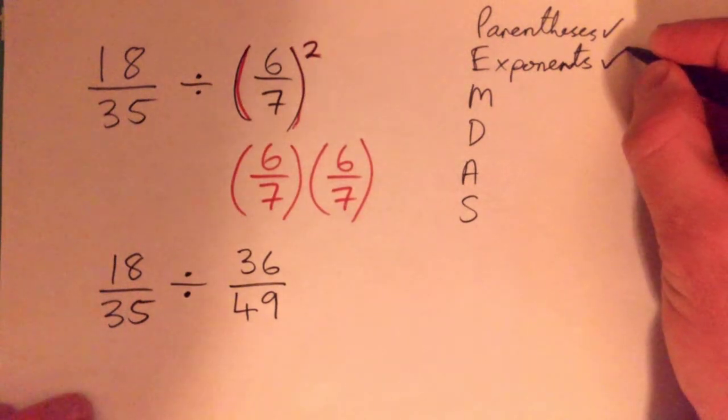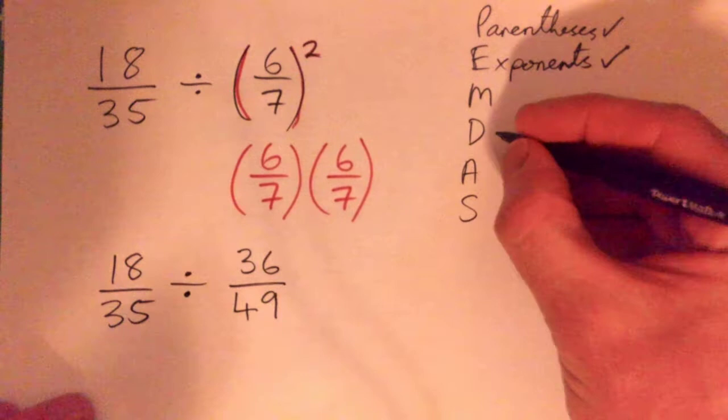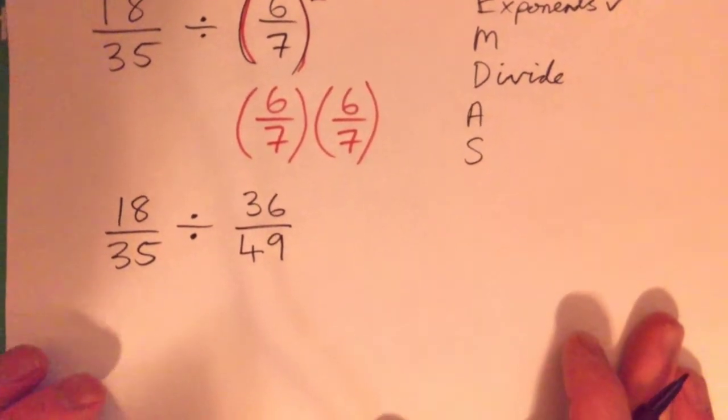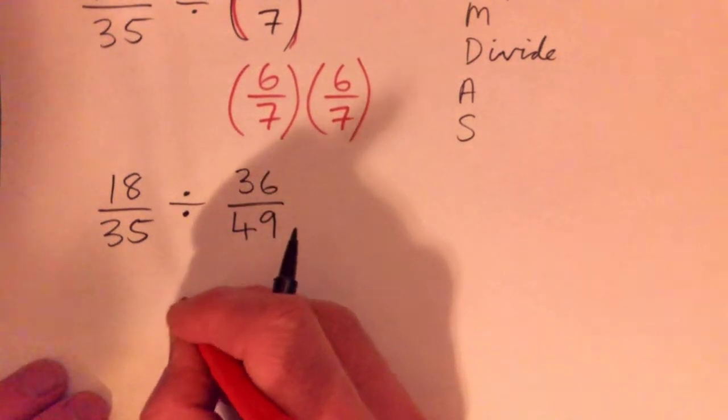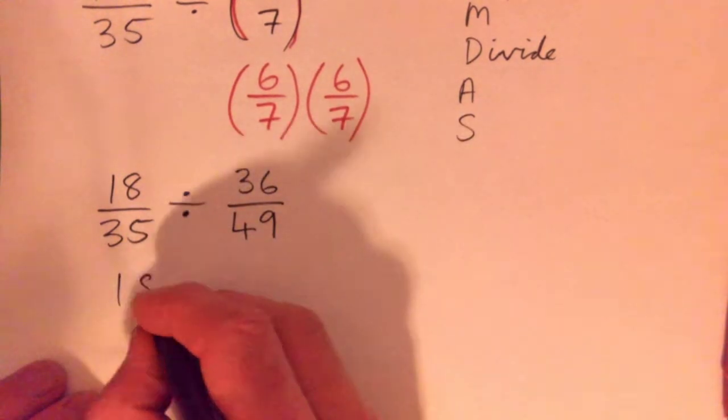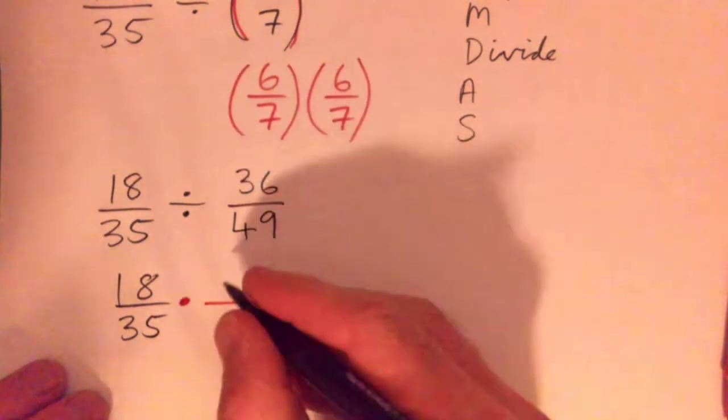And so now we have this thing divided by this thing, so we just have one thing left to do and that's divide. So how do you divide fractions again? Yep, just flip it and multiply, multiply by the reciprocal, right?